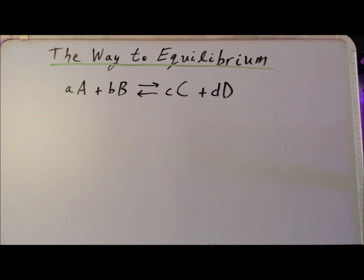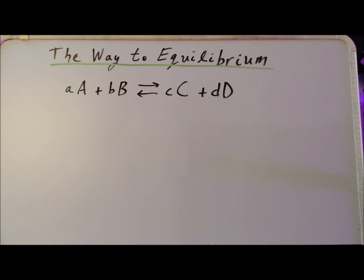Let us assume the following generic reaction where the capital letters A and B refer to reactants and capital letters C and D refer to products. Similarly, the small letters a and b are the stoichiometric coefficients for substances A and B, and small letters c and d are the stoichiometric coefficients for the products C and D.